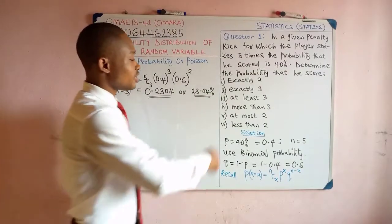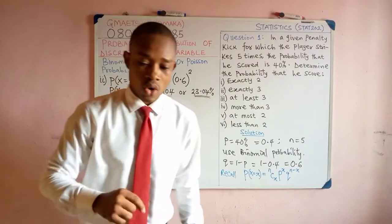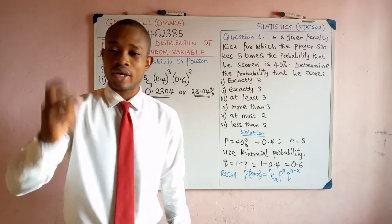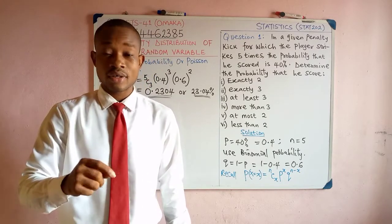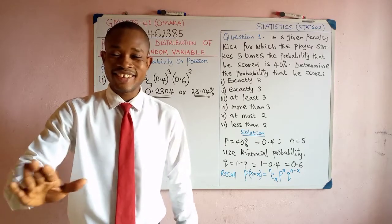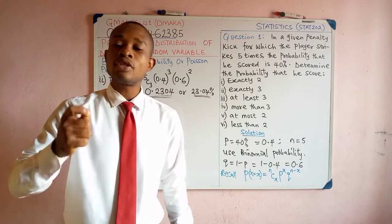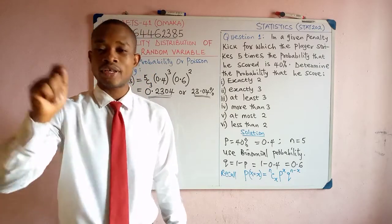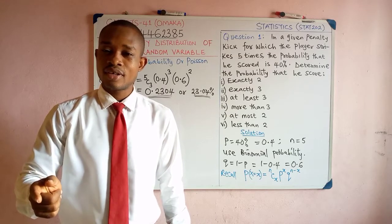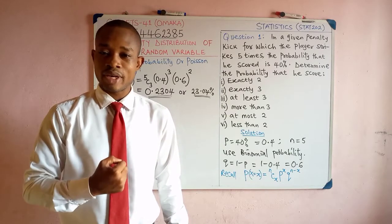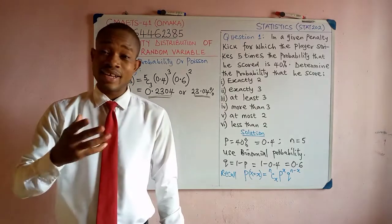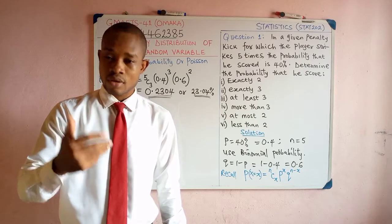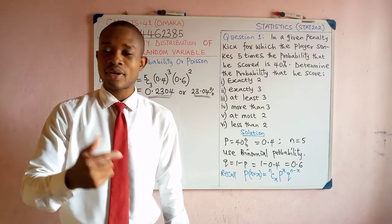Now we want to determine the probability that the player scored at least 3. At least 3 means he scored 3 or more. If I said I am going to give you at least 100 Naira, it means exactly 100 or more than 100. So at least 3 means the player scored exactly 3, or 4, or 5 penalty kicks.